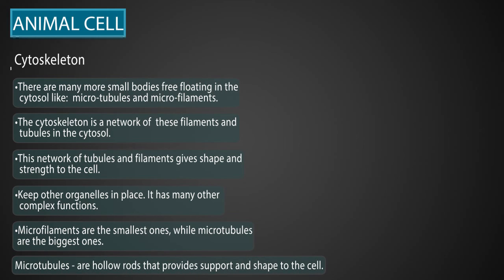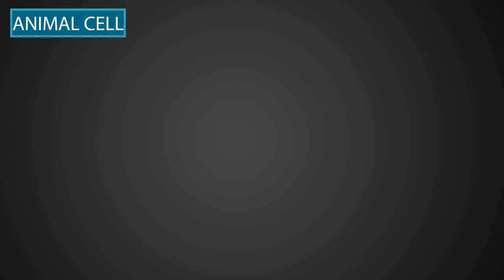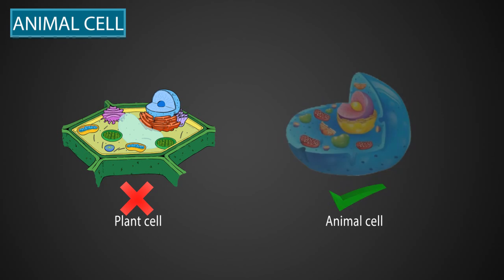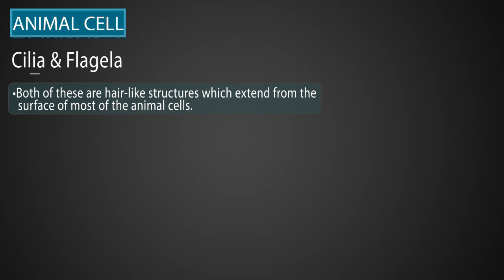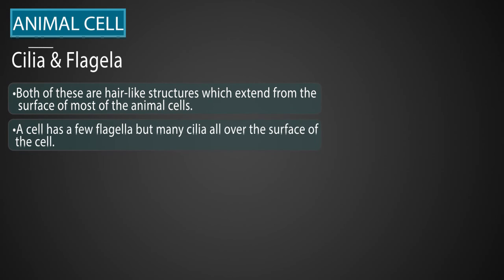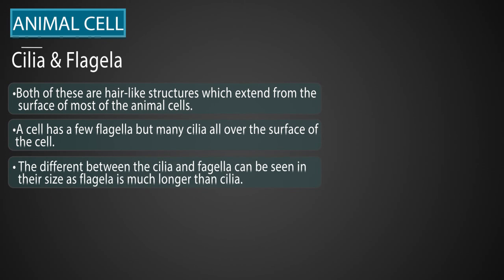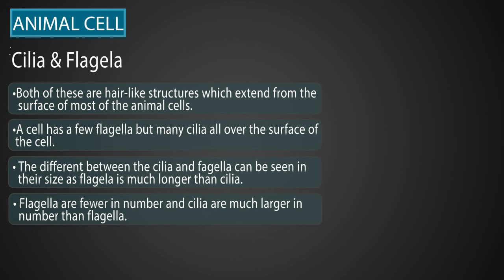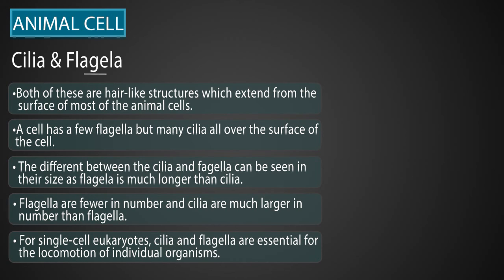Microtubules are hollow rods that provide support and shape to the cell. Now let's learn about two organelles not found in plant cells — only in animal cells: cilia and flagella. These are hair-like structures which extend from the surface of most animal cells. A cell has a few flagella but many cilia all over its surface. Flagella are much longer than cilia and fewer in number. For a single-cell eukaryote, cilia and flagella are essential for the locomotion of individual organisms.